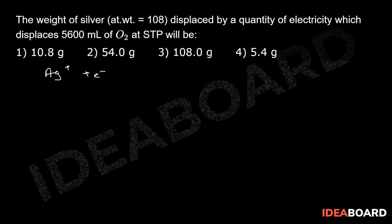Ag+ plus e- becomes Ag. For oxygen, O2 minus becomes 2O2 minus becomes O2 plus 4 electrons.